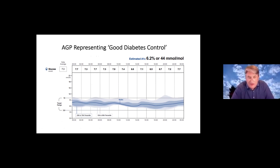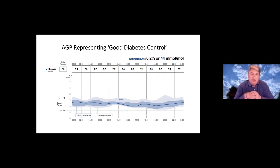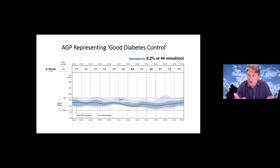The visual representation of good diabetes control is where the majority of someone's experience using their AGP profile fits into the 3.9 to 10 mmol target range. It's always by comparing back to this image that we'll be looking at the subtypes of therapy change that we might be advising.